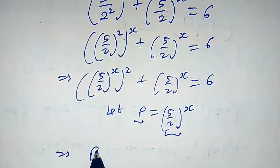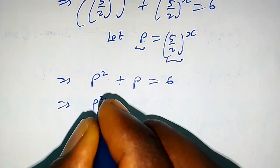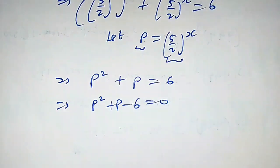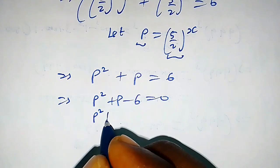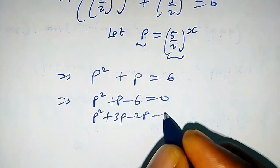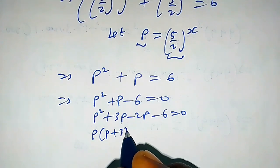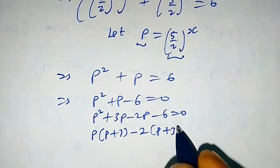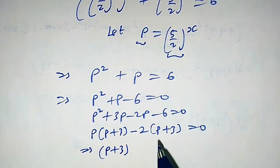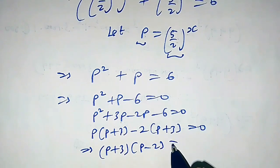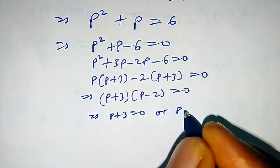This implies we get p squared plus p equals 6, which rearranges to p squared plus p minus 6 equals 0. We can factorize this: p squared plus 3p minus 2p minus 6 equals 0. Factoring, we get p(p + 3) minus 2(p + 3) equals 0, so (p + 3)(p − 2) equals 0.